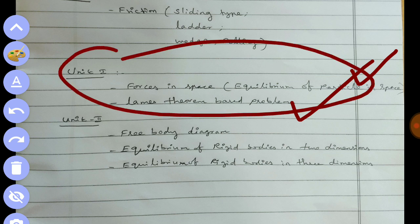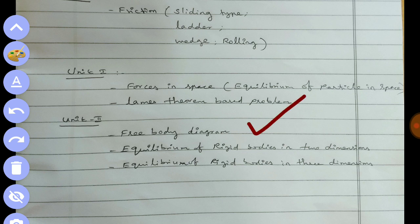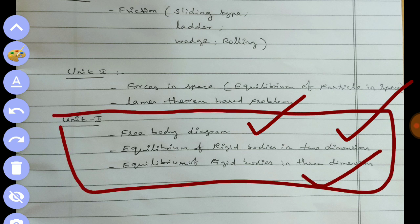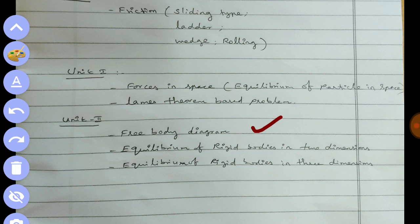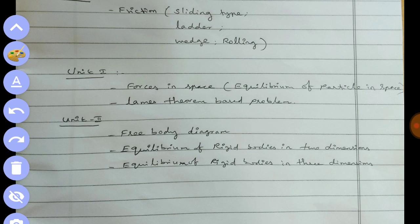Unit 5 and Unit 2 cover Equilibrium of Rigid Body in 2 Dimensions and Equilibrium of Rigid Body in 3 Dimensions. Unit 2 has 3 compulsory topics. The best trick is to go through the last 5 years' question papers — you will find the repeated questions and can schedule your preparation accordingly.